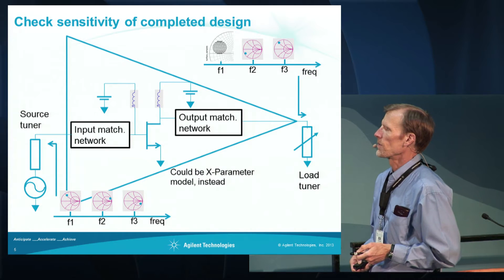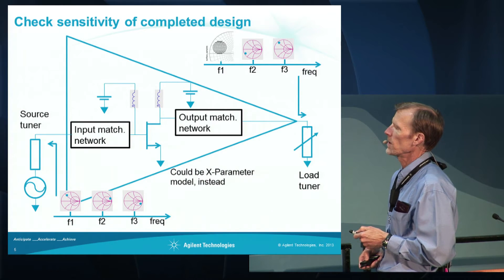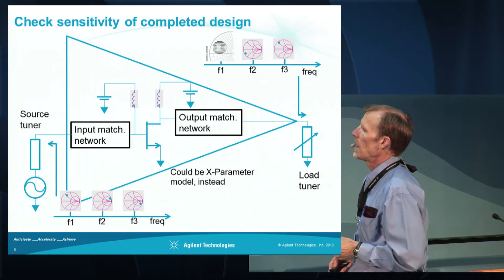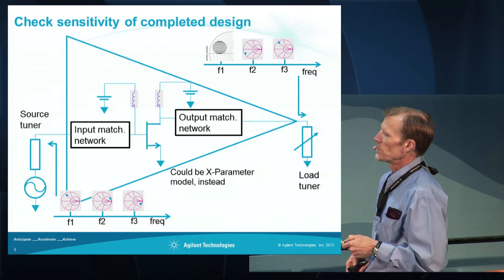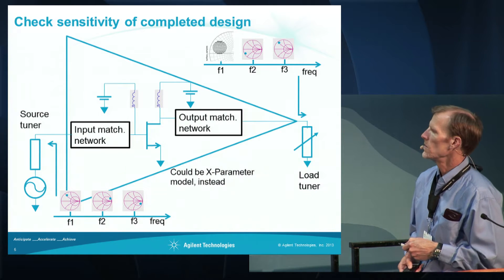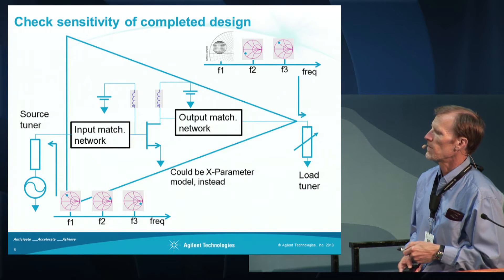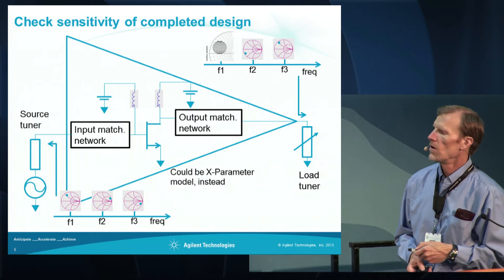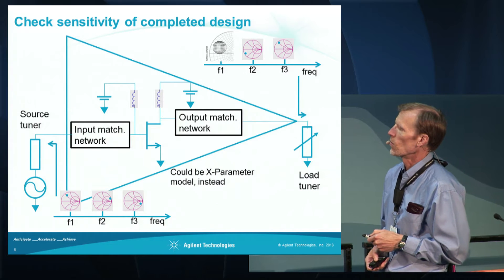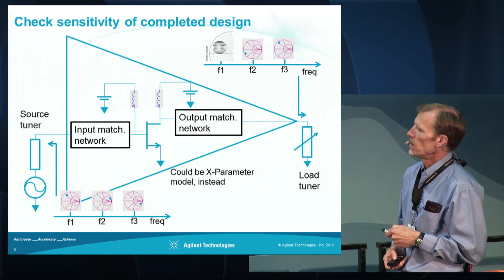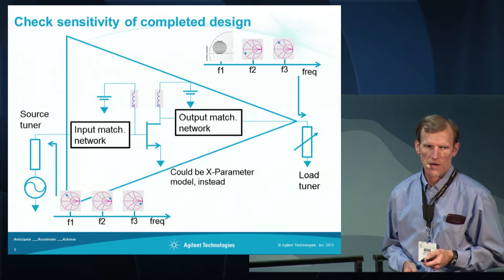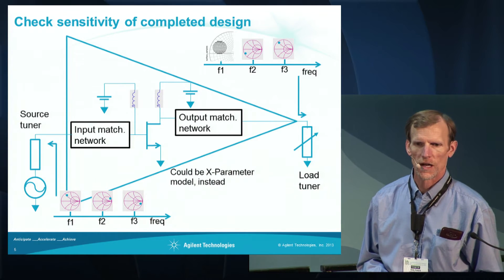Once you've gone through the process of determining what these optimal impedances need to be, and you've designed your input and output matching networks, you have a completed amplifier. But when you did this design, you made an assumption about what the external load impedance is — maybe 50 ohms broadband, or the input impedance of the next stage. A sensitivity check would be to see how performance varies as you change the external load.